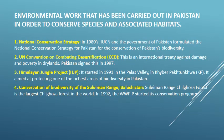Environmental work carried out in Pakistan to conserve species and associated habitats includes: 1. National Conservation Strategy — in the 1980s, IUCN and the Government of Pakistan formulated the National Conservation Strategy for Pakistan for the conservation of Pakistan's biodiversity. 2. UN Convention on Combating Desertification (CCD) — an international treaty against damage and poverty in dry lands; Pakistan signed this in 1997. 3. Himalayan Jungle Project (HJP) — started in 1991 in the Palas Valley in Khyber Pakhtunkhwa, aimed at protecting one of the richest areas of biodiversity in Pakistan.